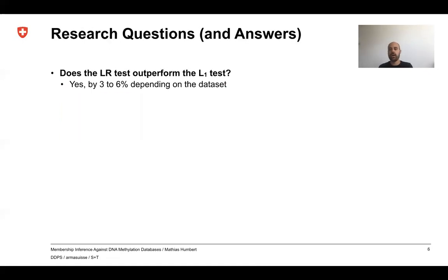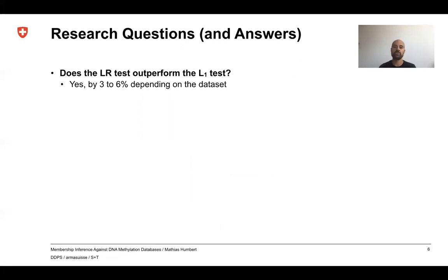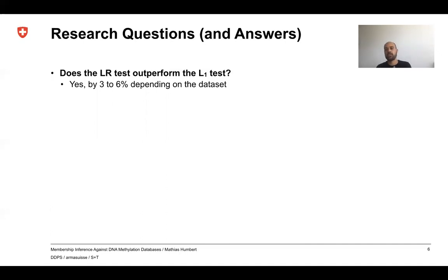Our evaluation focused on four research questions. The first question was whether the likelihood ratio test outperforms the L1 distance test. Yes, it does — by three to six percent depending on the dataset. This also confirms the theoretical result that the likelihood ratio test gives the best true positive rate for a given false positive rate.